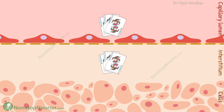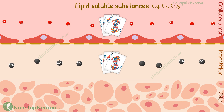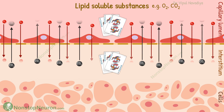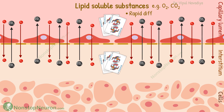So far, we haven't talked about those guys who have wild cards — it's the lipid-soluble substances. For example, oxygen and carbon dioxide. They can cross the biological membrane, so they can cross the capillary wall from anywhere, including through the endothelial cells. Because of this, their diffusion is far more rapid.